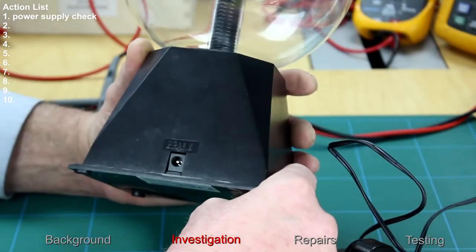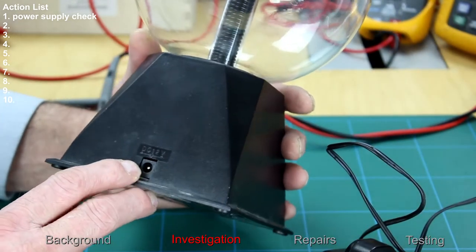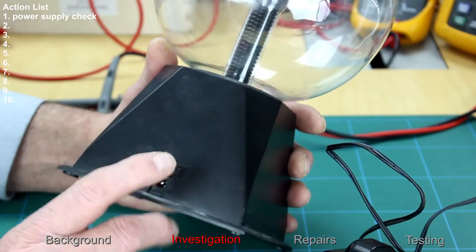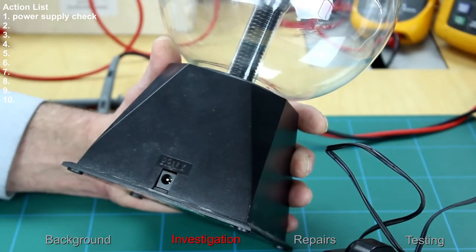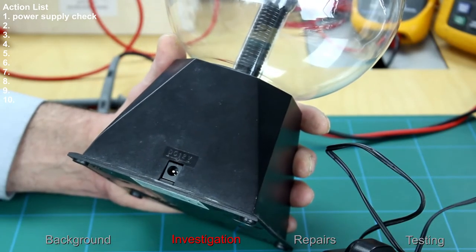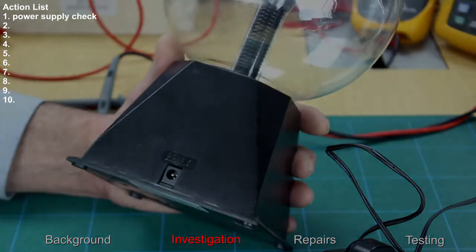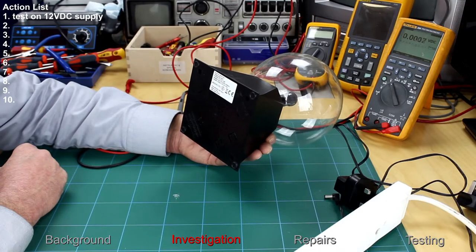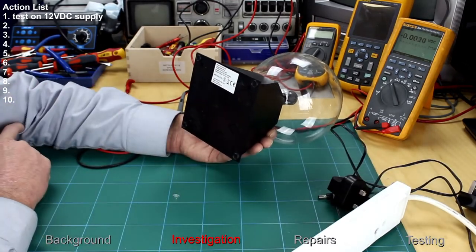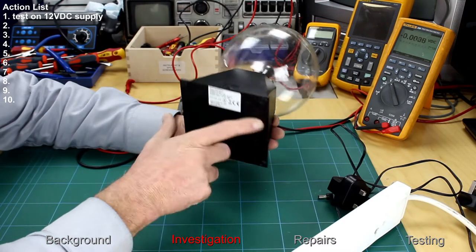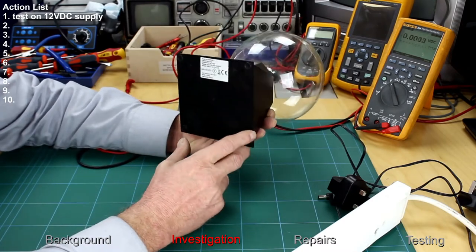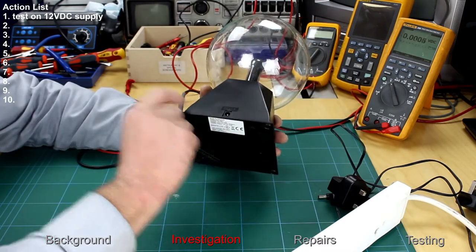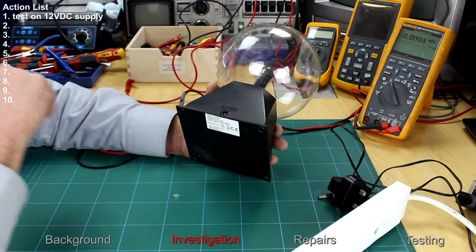So the next test will be to hook up a 12 volt supply. Actually it says DC 12 volts on the unit as well. So maybe this has just been supplied with the wrong power supply. I haven't got a 12 volt power supply to hand from one of these adapters, but I have from a bench power supply. So I'm going to take it apart because I want to see what's inside it and I'm going to hook the power supply directly up to the printed circuit board inside.